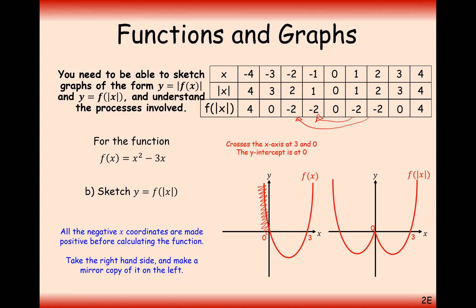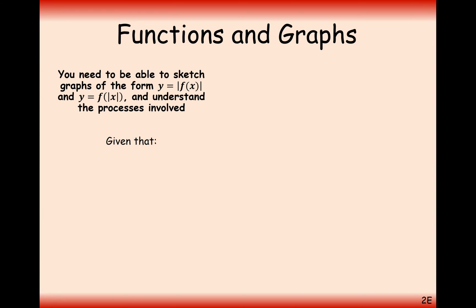To summarise the two rules: if the modulus is on the outside of the brackets — |f(x)| — you reflect the bottom up to the top. If the modulus symbols are inside the brackets — f(|x|) — you reflect the right-hand side to the left-hand side and remove the original left-hand side. You can just remember those two steps.